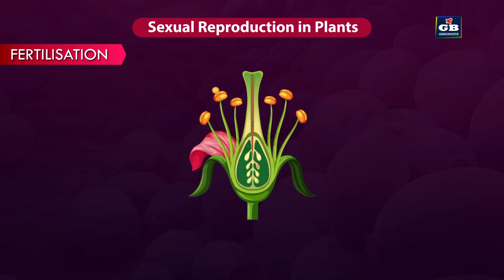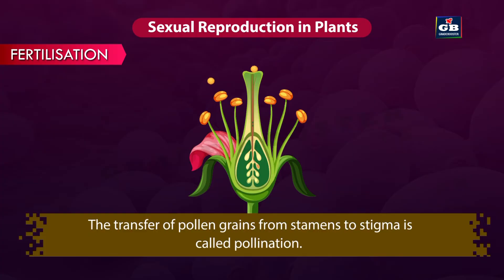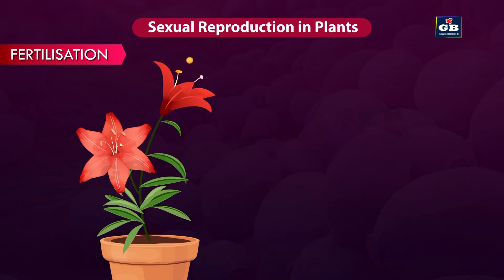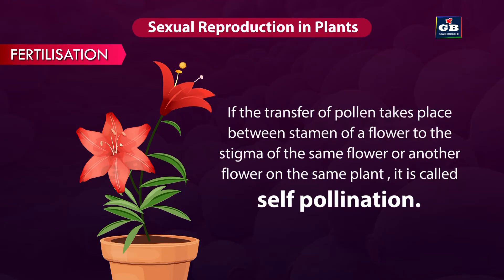Pollination. For the process of fertilization, the pollen grains have to reach from anther to stigma. This transfer of pollen grains from stamens to stigma is called pollination. If the transfer of pollen grains takes place between the stamen of a flower to the stigma of the same flower or another flower on the same plant, it is called self-pollination.